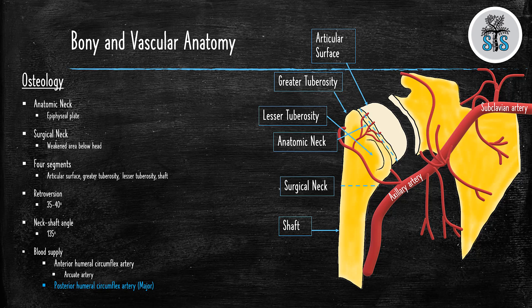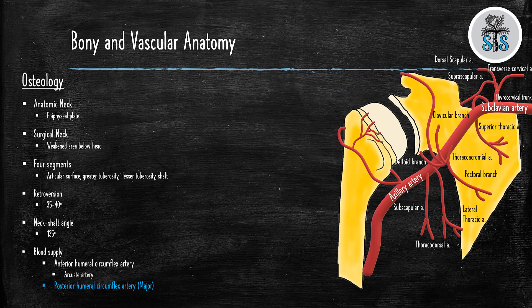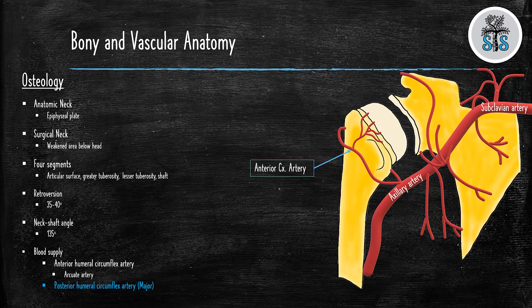The blood supply is very important, and knowing this is very high yield. So we have our subclavian artery that transitions into the axillary artery after it crosses the first rib. You want to know the anterior circumflex artery, which gives branch to arcuate artery, and the posterior circumflex artery. But why is knowing the blood supply so crucial in proximal humerus fractures? Well, proximal humerus fractures are at a higher risk for avascular necrosis, and if the major blood supply is disrupted, which is the posterior humeral circumflex artery, then we run the risk of avascular necrosis.